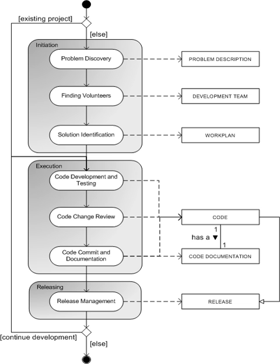A package management system is a collection of tools to automate the process of installing, upgrading, configuring, and removing software packages from a computer. The Red Hat Package Manager for .rpm and the Advanced Packaging Tool for .deb file formats are package management systems used by a number of Linux distributions.